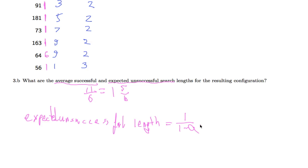What is the load? We have 6 entries in a table of size 11, so we have 1 over 1 minus 6 over 11, and that is equal to 1 over 5 over 11, or equal to 11 over 5, and that we can also say is equal to 2.2.